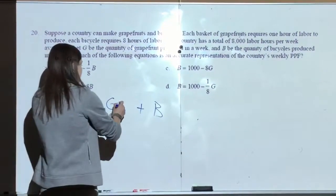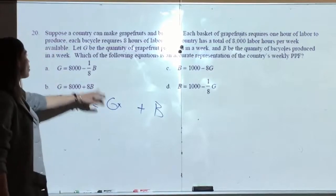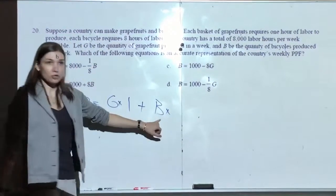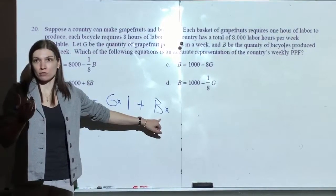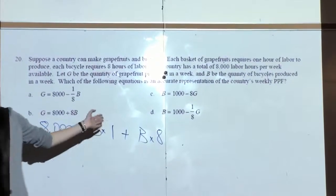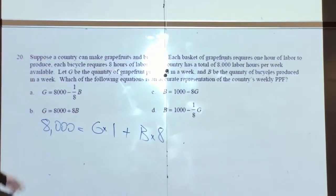If they produce G, each production of G costs one hour. Each bicycle costs us how many hours? Eight. Think of this as budget line and quantity and prices. That's all there is to it. The BPF is pretty much that.